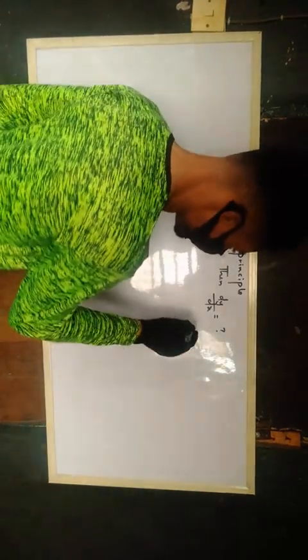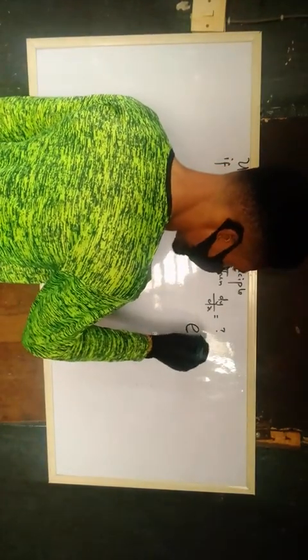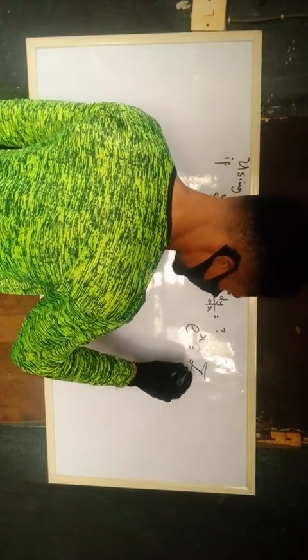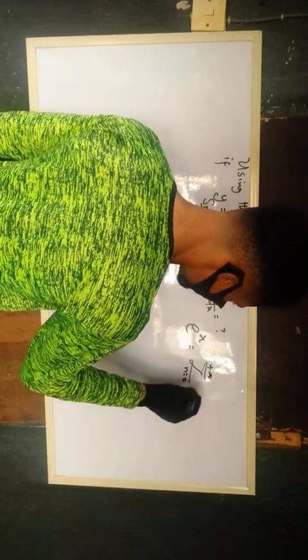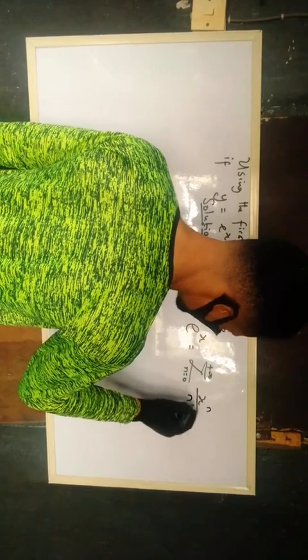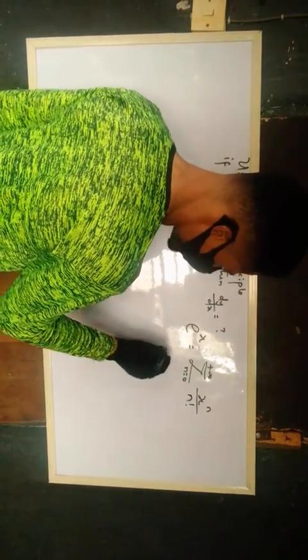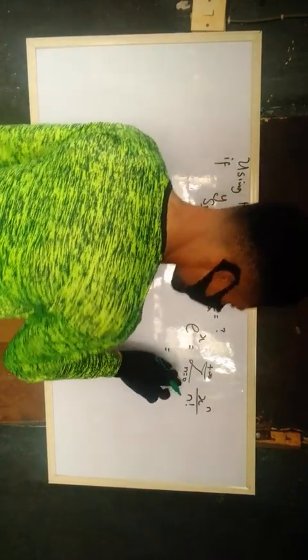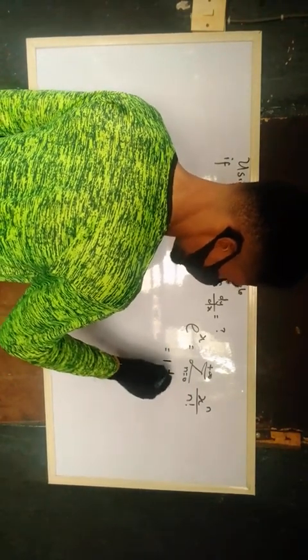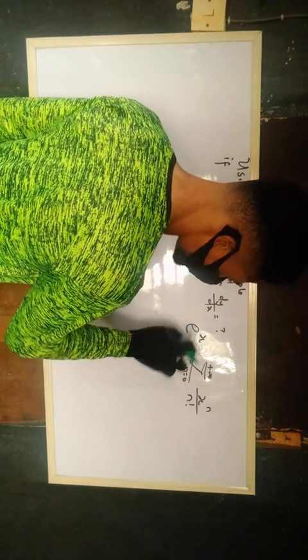Firstly, we need to know that e to the power x is equal to sum as n goes from 0 to infinity, x raised to the power of n over n factorial. And if you check this very well, when n is equal to 0, we have 1 plus, when n is equal to 1,